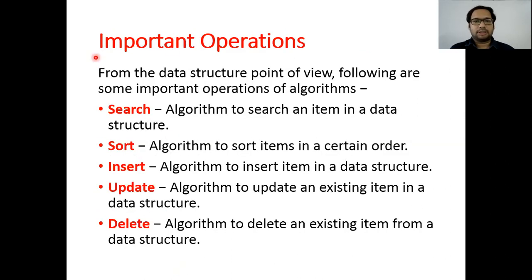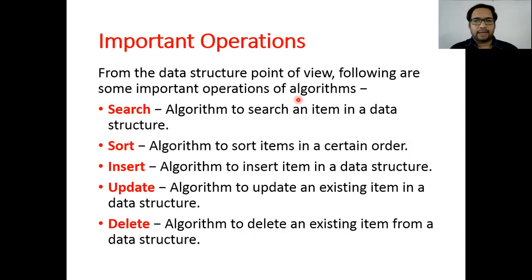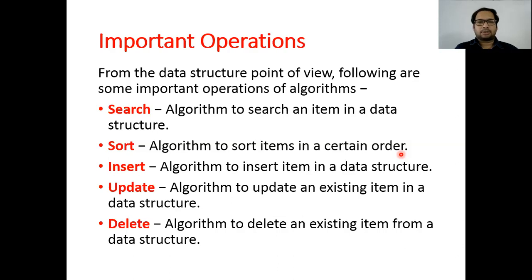Next are important operations — these are operations we can perform on data structures with the help of algorithms. Algorithm is a process and data structure is a place where we store the data, so we write processes to apply them on data structures. The first operation is search: algorithm to search an item in a data structure. Second is sort: algorithm to sort items in a certain order — ascending or descending. Then we have insert, update, and delete, which are basic operations. These are the key operations you can perform on data structures with the help of an algorithm.